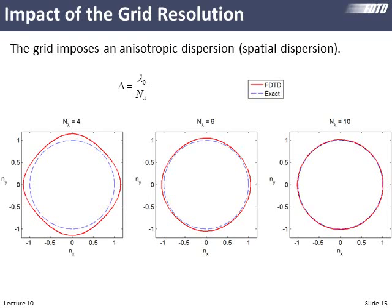We can do the same analysis for grid resolution — the Δx, Δy, Δz parameters. The dashed blue line is what a physical wave should see, but in our FDTD model the red line looks more square than circular, meaning waves traveling in different directions start seeing slightly different material properties. As we increase grid resolution to about 10 steps per wavelength, it looks close to the exact solution — which is one reason we always say you want to resolve the shortest wavelength with at least 10 cells. Certain configurations need more than that.